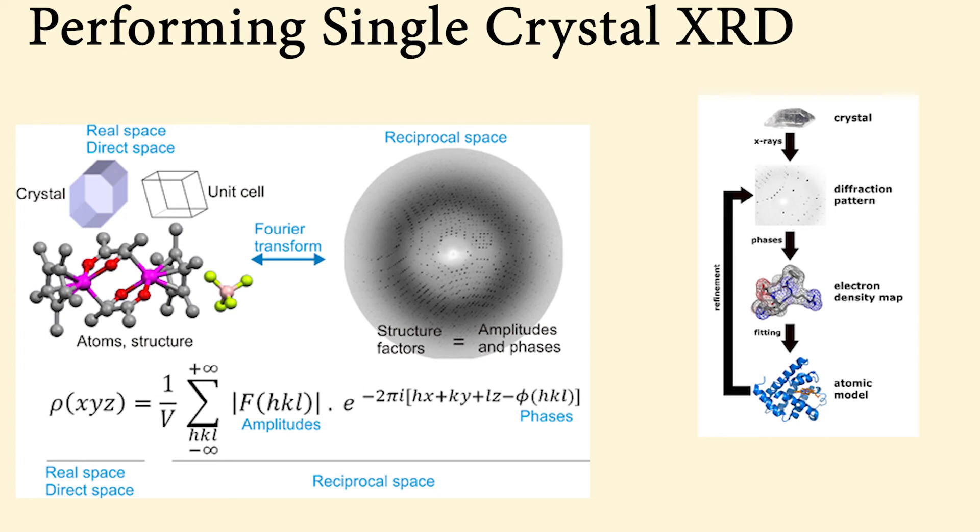This is done by solving the phase problem. From the phase problem, the elements making up the crystal can be assigned based on the measured intensity values. Generally, heavier elements have larger intensity values.